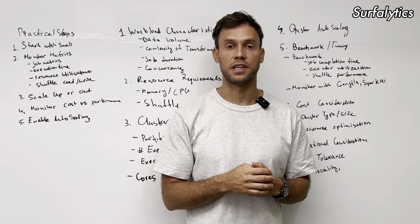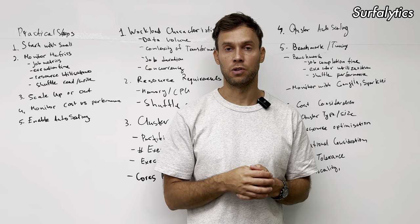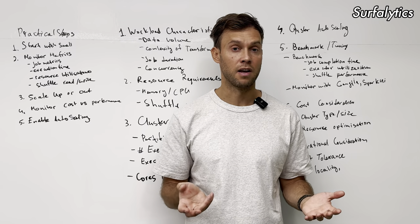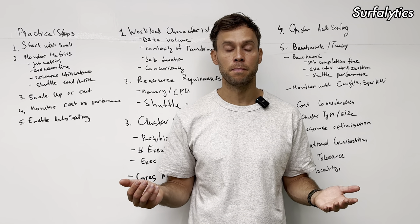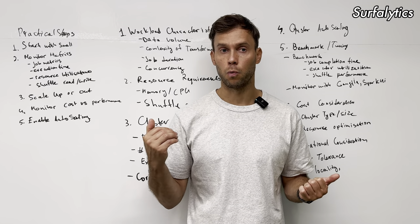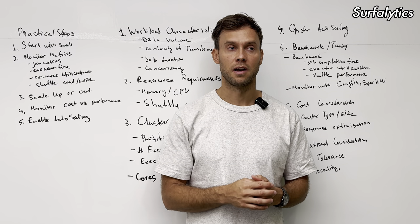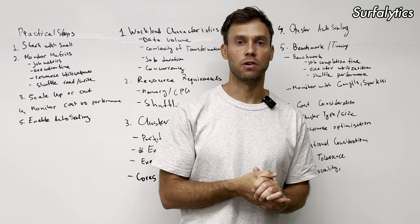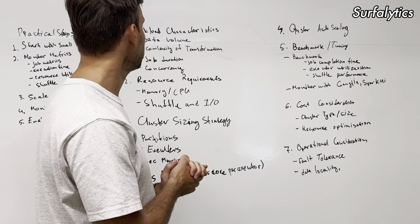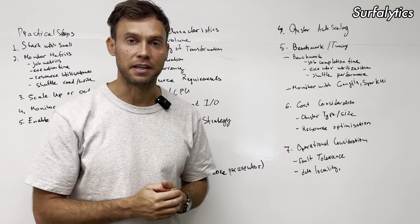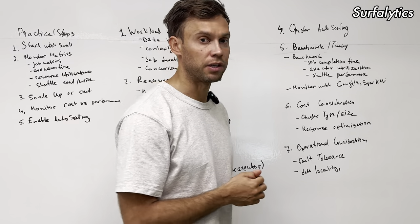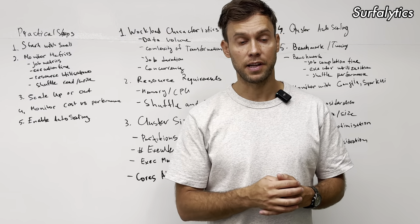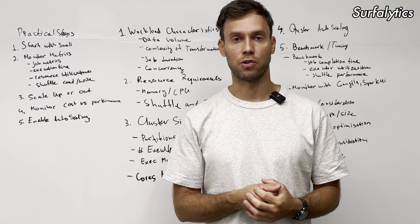Those methods are also the same for most distributed systems — even applicable for Redshift and Snowflake, because they're still distributed systems. There could be different ways of consuming the metrics, but the idea is more or less the same. Today we'll discuss some of the key ideas, where and what you need to look at, and then I'll give you some practical steps and maybe some examples from my personal experience.